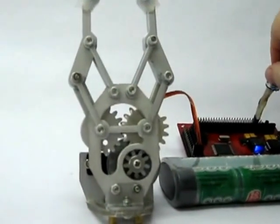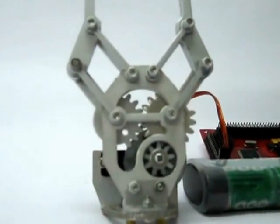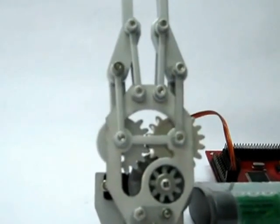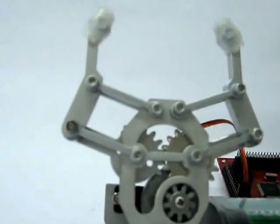I'm just going to show you what it can do. You can see there that it's got a 2 to 1 gear ratio between the servo and the gripper itself.